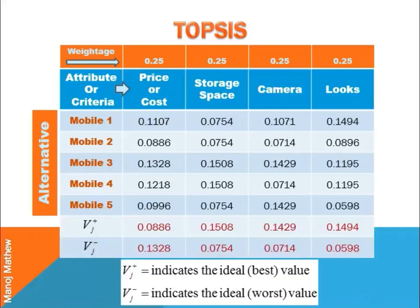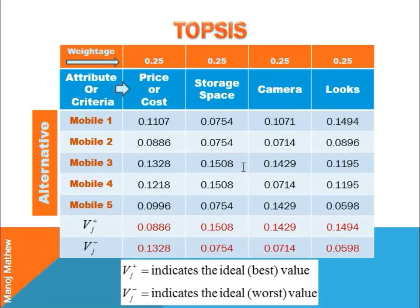Next, we calculate the ideal best and ideal worst values. For non-beneficial criteria like price, a lower value is desired. Thus in column one, the minimum value of 0.0886 is the ideal best and the maximum value of 0.1328 is the ideal worst. For beneficial criteria like storage space, camera, and looks, the maximum value is the ideal best and the minimum value is the ideal worst.